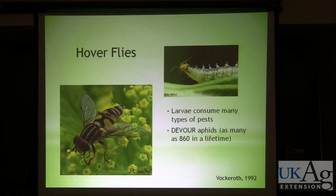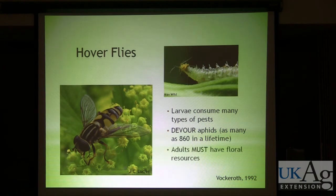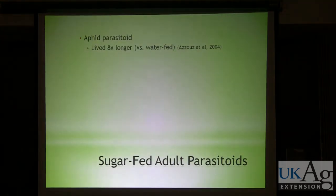One example is this syrphid fly, or hover fly — here is the adult fly. The larvae will consume many types of insect pests and devour aphids; some species can consume as many as 860 aphids in a lifetime. But the point is that the adults must have floral resources. In order to have these larvae consuming the aphids, you have to have the adults, and to have the adults, you have to have some flowers around for them.